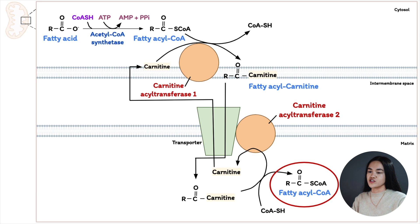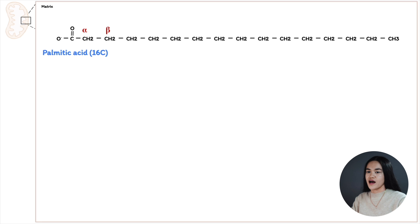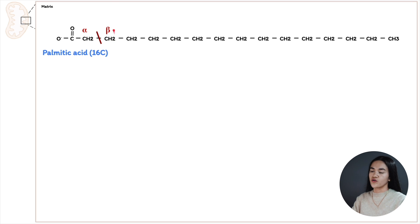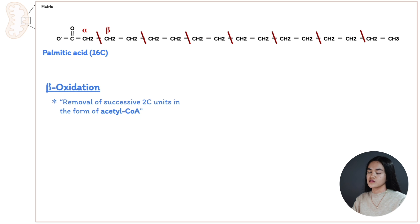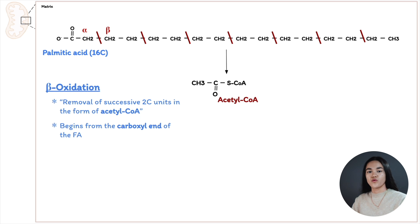It's called beta-oxidation because we are breaking the bond between the alpha and beta carbon — carbon 2 and carbon 3 of the fatty acid — during each cycle. Using palmitoyl-CoA as an example, a 16-carbon chain, oxidation involves breaking the bond between the alpha and beta carbon each cycle. It involves the removal of successive two-carbon units in the form of acetyl-CoA, beginning from the carboxyl end of the fatty acid, shortening the fatty acid by two carbons per cycle.